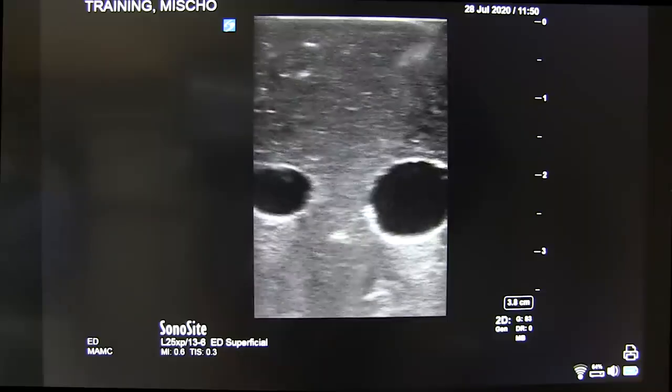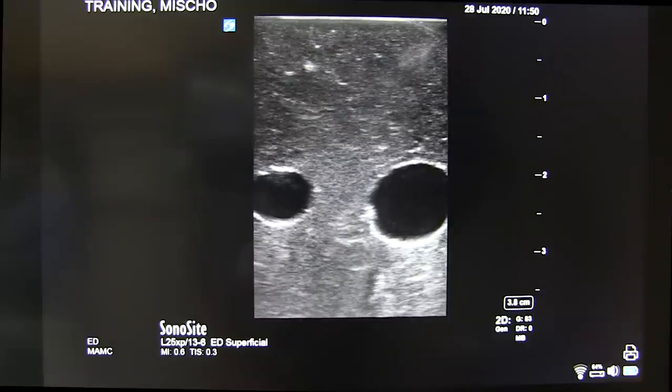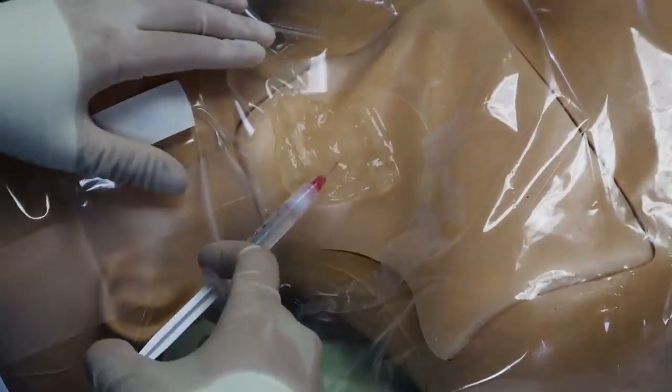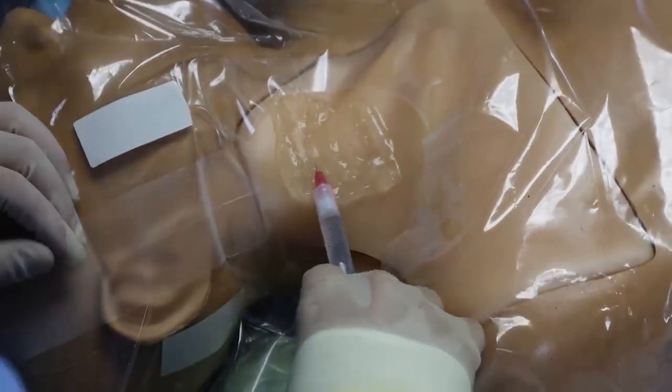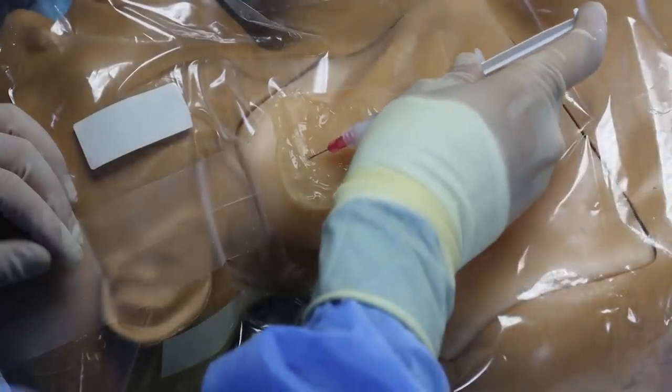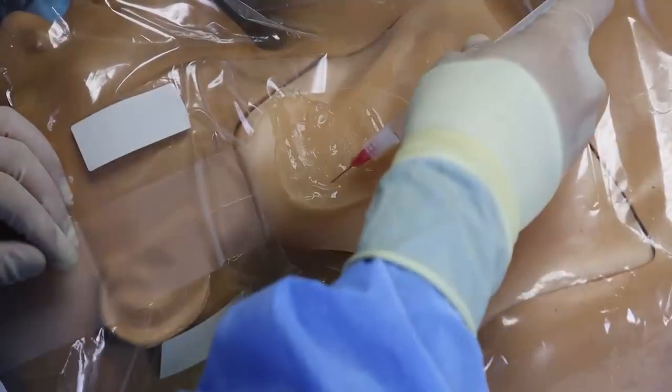Next, I slap some sterile gel onto the patient and have a look with the probe again. So let's see. Yep, looks like my sight. Having confirmed where I plan to make the puncture, I inject lidocaine subcutaneously. It's important to remember that you will be sewing the line in. So you also need to inject where you anticipate the suture needle will be passing.